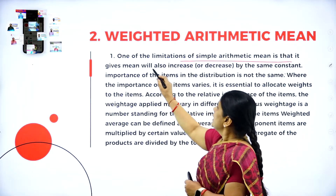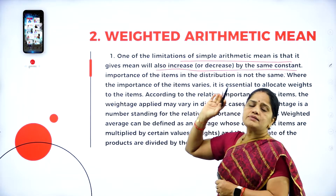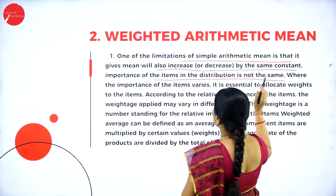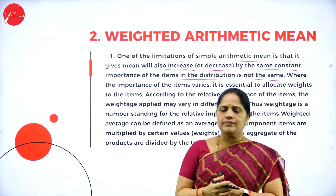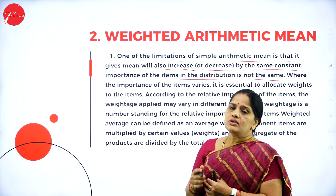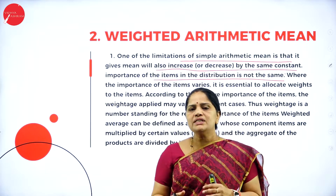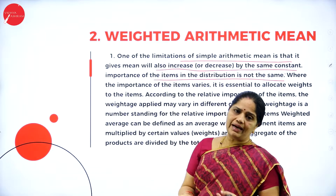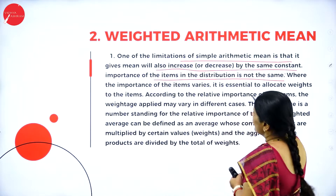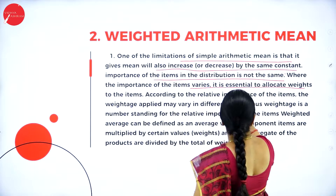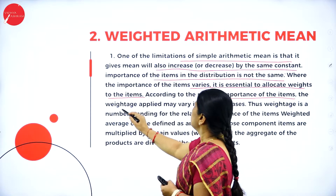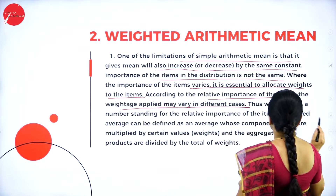One of the limitations of simple arithmetic mean is that the mean will also increase or decrease by the same constant, whereas the importance of an item in the distribution is not the same. When we are calculating the mean, it does not take into consideration the importance of each of the values. So where the importance of items varies, it is essential to allocate weights to the items according to their relative importance.